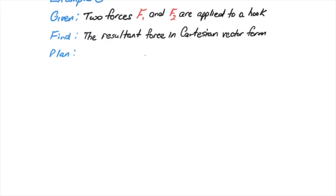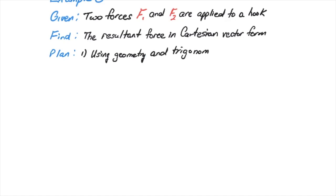In this example, we're going to look at three-dimensional vectors and resolving those three-dimensional vectors into forces. This is example 3, where we're given two forces, F1 and F2, that are applied to a hook in non-planar directions. We want to find the resultant force in Cartesian vector form.